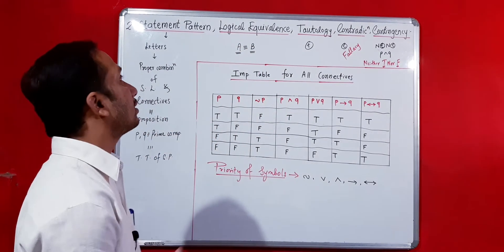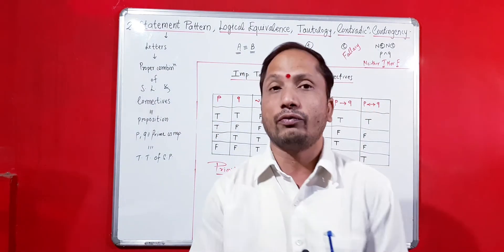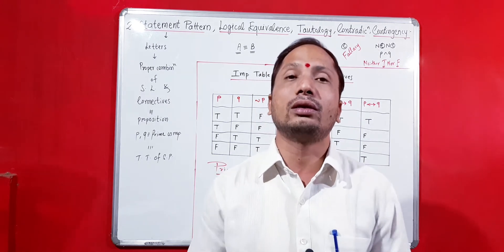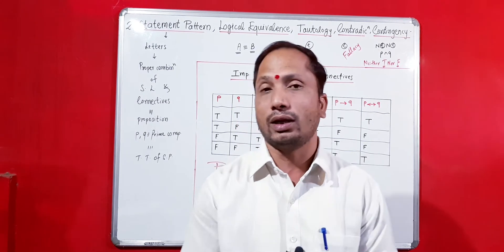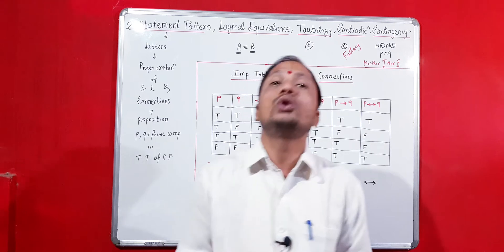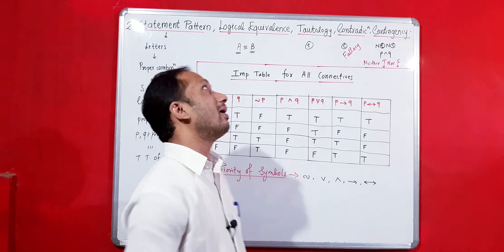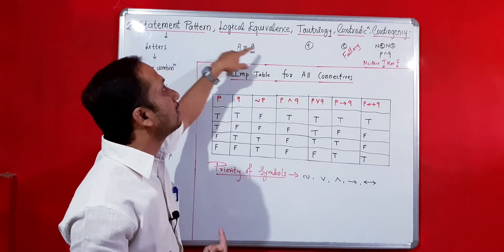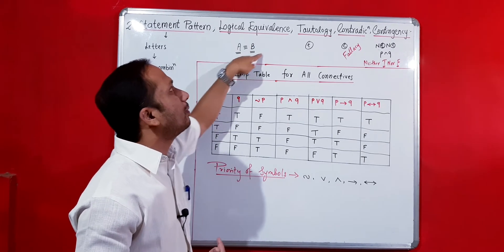The second concept is logical equivalence. When both statement patterns' truth tables are identical — that is, if A is the first statement pattern and B is the second, and their truth tables are identical — that type of equivalence is known as logical equivalence.